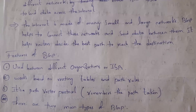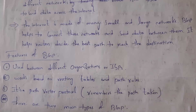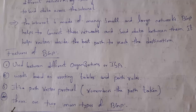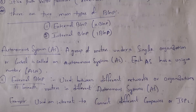One feature of BGP is that different organizations — different companies and different internet service providers like ACT Fibernet and Jio — can communicate to each other even though they are using different networks, because BGP works based on routing tables. Each and every router contains a routing table in which complete routing information is stored, and based on this routing table routers transfer data to the correct device. BGP is also a path vector protocol, meaning BGP remembers the path taken.